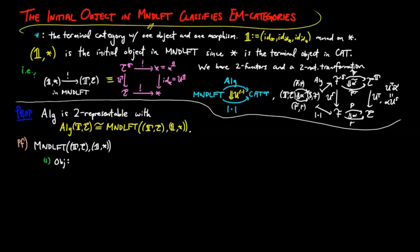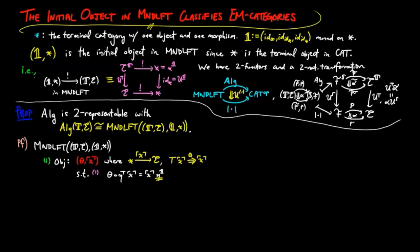By definition of 1-morphisms of monad lifts, an object in this category consists of a functor from the terminal category to E, which is equivalent to giving an E-object X, along with a natural transformation TX to X, which is equivalent to giving an E-morphism from TX to X, such that 1: theta composed with eta_TX equals X composed with eta_{bold-faced 1}. But the unit for the monad 1 is the identity natural transformation, so on the right this is equivalent to the identity morphism on X, and on the left this is equivalent to the morphism theta composed with eta_T on component X.